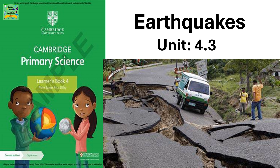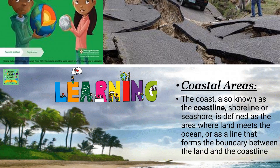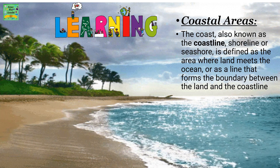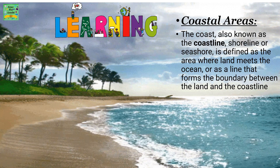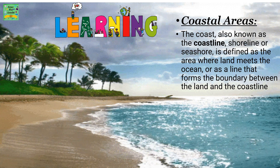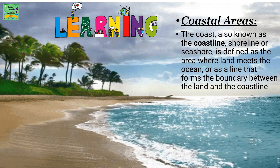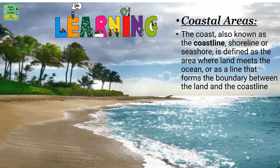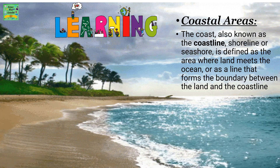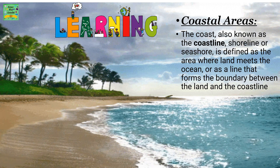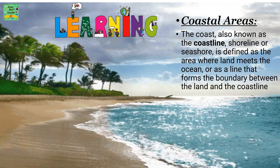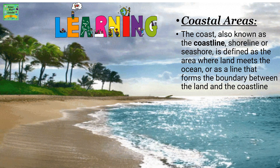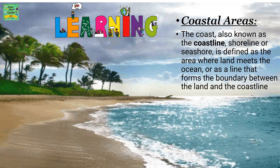Unit 4.3: Coastal Areas. The coast, also known as the coastline, shoreline, or seashore, is defined as the area where land meets the ocean, or as a line that forms the boundary between the land and the coastline.